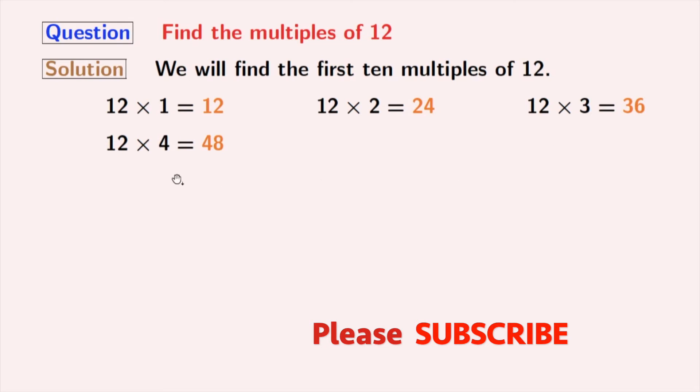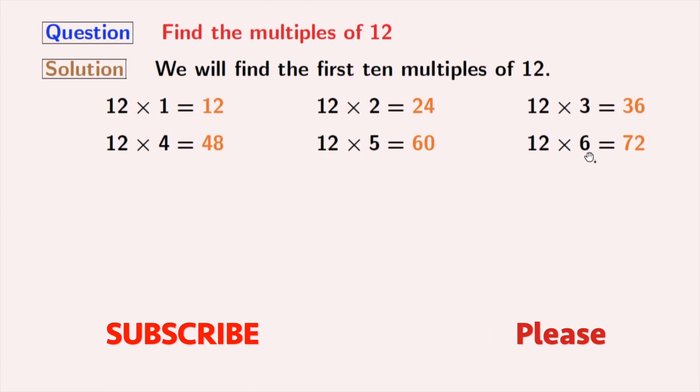Multiplying 12 with 4, we get 48. Multiplying 12 with 5, we get 60. Multiplying 12 with 6, we get 72.